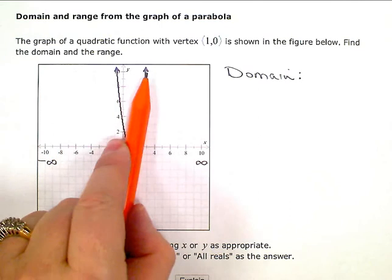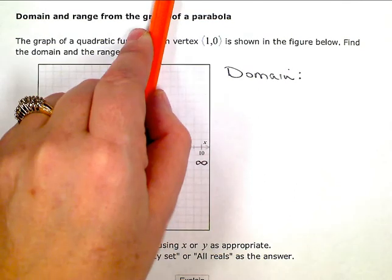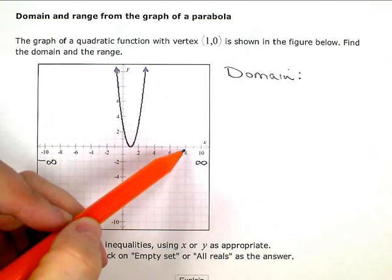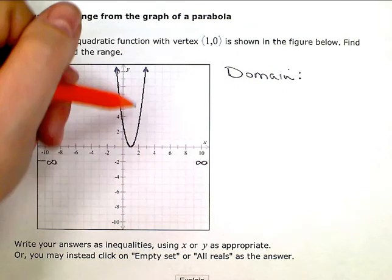the little arrow means it keeps on going forever, and because it's kind of angled, anywhere I go for an x, I'll be able to go up and hit the graph somewhere because the graph keeps going forever.